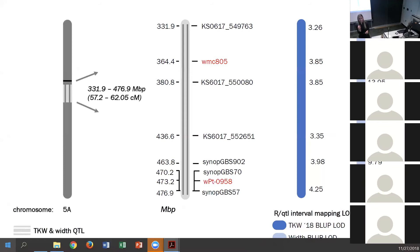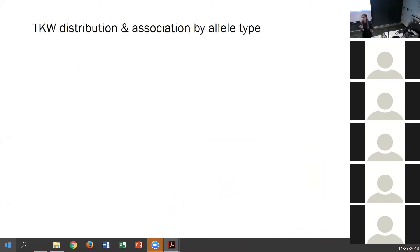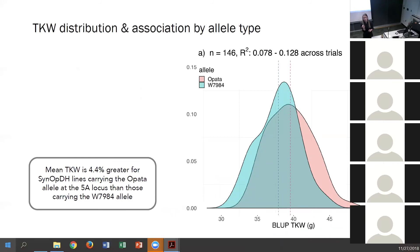Now I want to show you the parental associations for these alleles and which parent's allele is the positive donor for these traits. We can do that by breaking the doubled haploid population into two groups based on whether they carry the synthetic allele or the Opata allele across the 140 megabase pair region, and looking specifically here at the thousand kernel weight distribution. Thousand kernel weight is on the x-axis, and we've broken the population into two groups with Opata alleles across the locus in pink or synthetic in blue, and on average we see a 4.4% increase in thousand kernel weight for doubled haploid lines that carry the Opata allele rather than the synthetic.